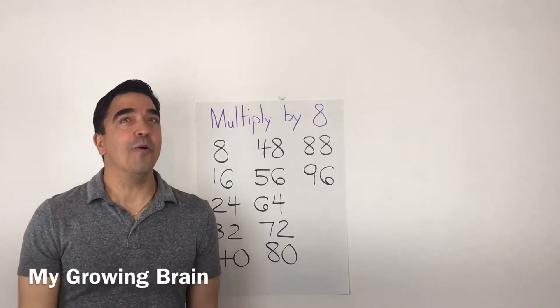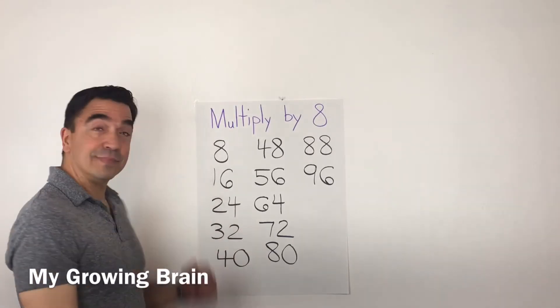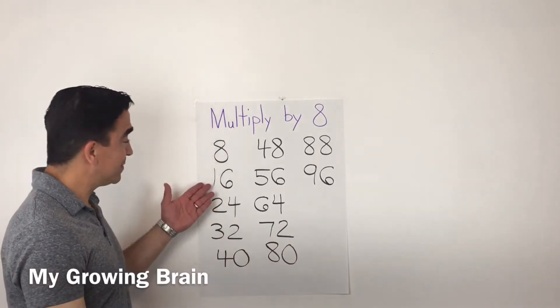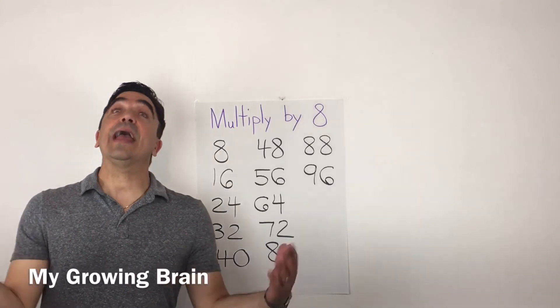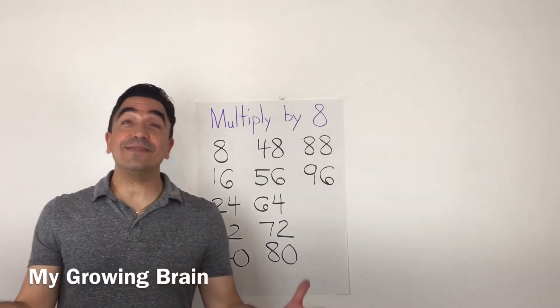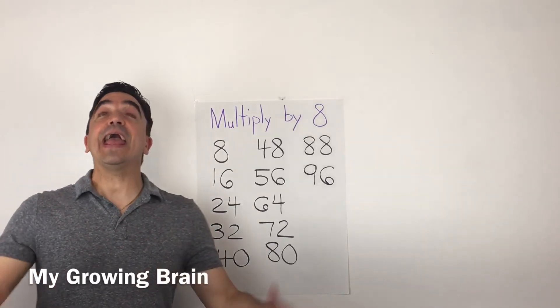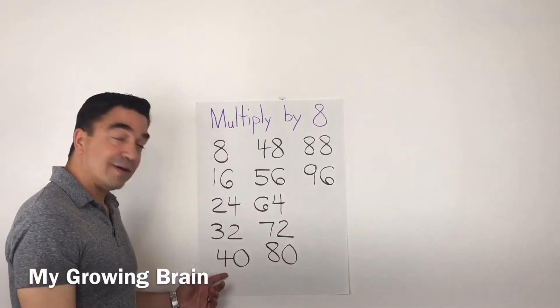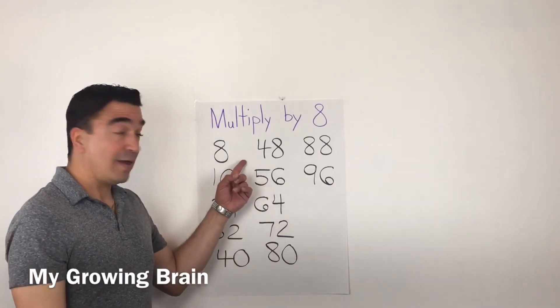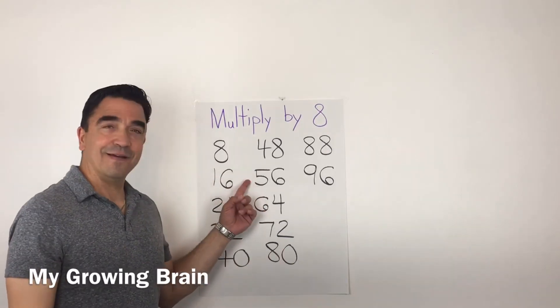Now watch my trick. 8 times 1, 8. 8 times 2, 16. 8 times 3, 24. 8 times 4, 32. 8 times 5, 40. 8 times 6, 48. 8 times 7, 56.